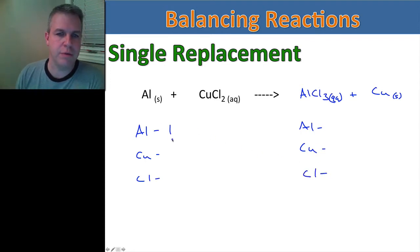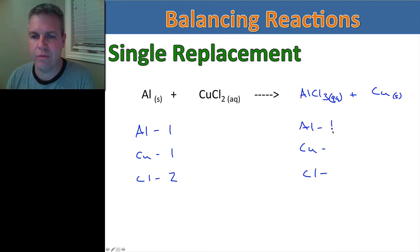So we can start. I have one Aluminum on this side, I have one Copper and I have two Chlorines. And on this side I have one Aluminum, I have one Copper, and I have three Chlorines.